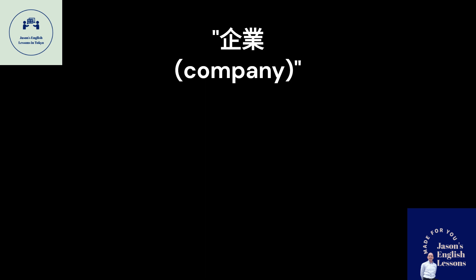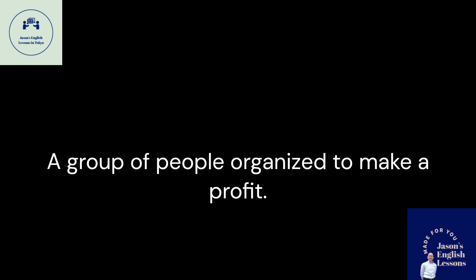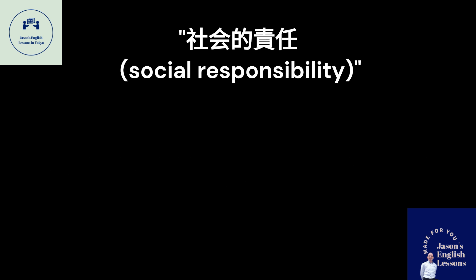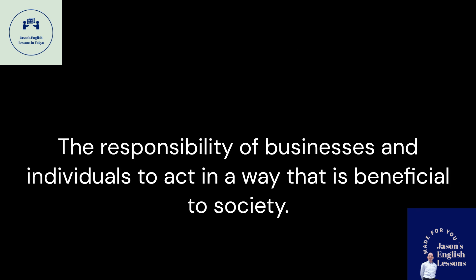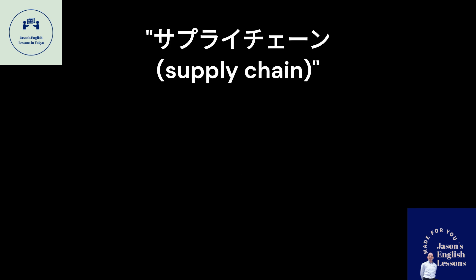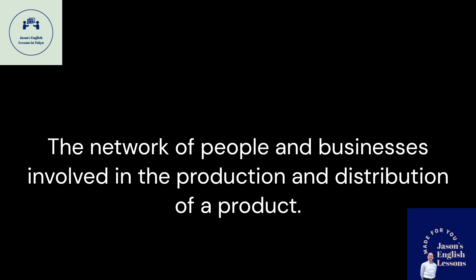Company: A group of people organized to make a profit. Social Responsibility: The responsibility of businesses and individuals to act in a way that is beneficial to society. Supply Chain: The network of people and businesses involved in the production and distribution of a product.